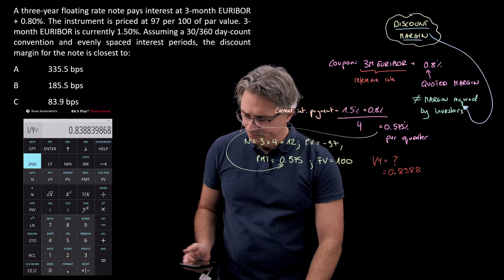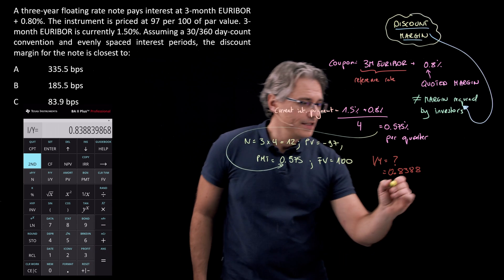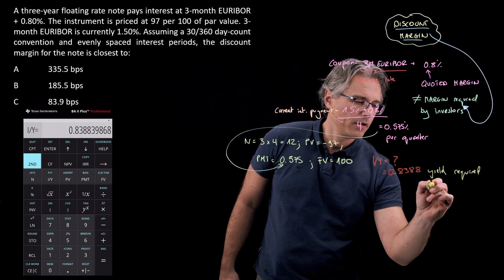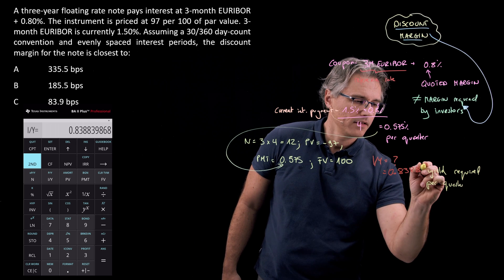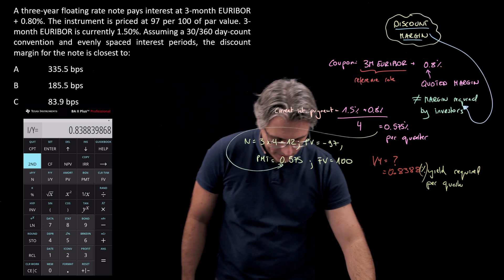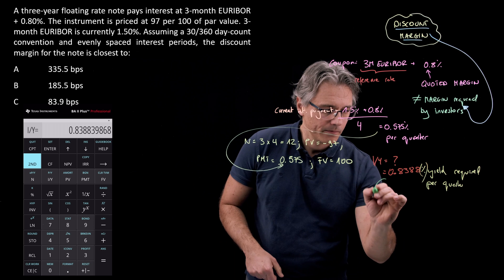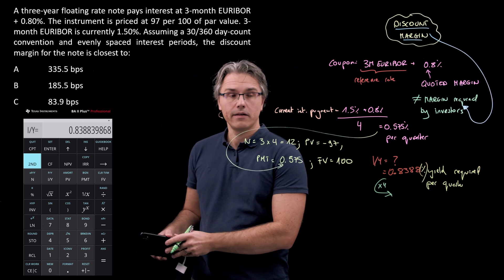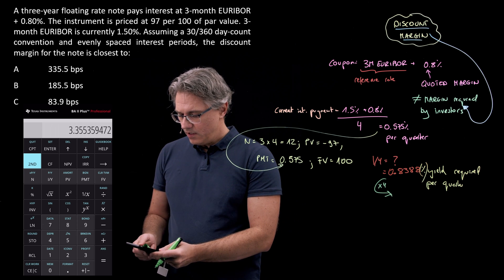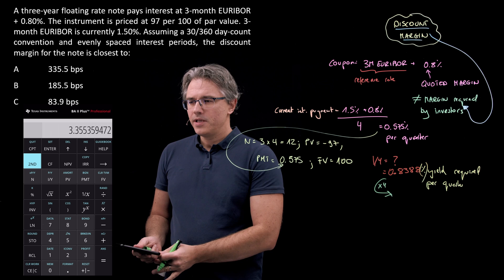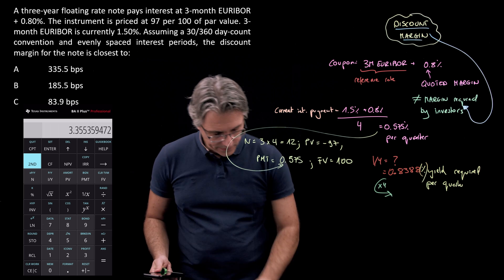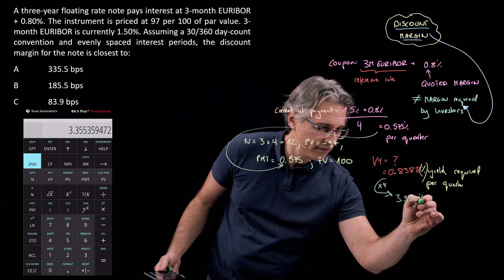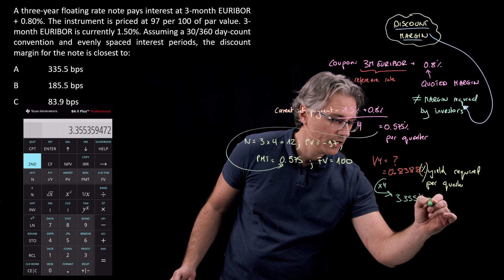This is the yield currently required by investors on a per quarter basis. If we want to scale this up to a full year, we multiply by four. Let's see what that gives: times four equals 3.355%. That's enough precision—3.355% per year or per annum.